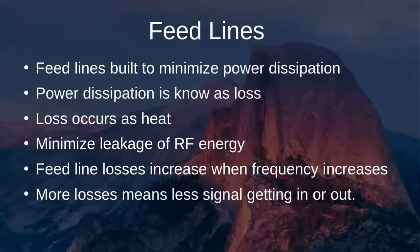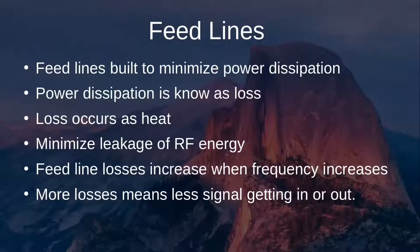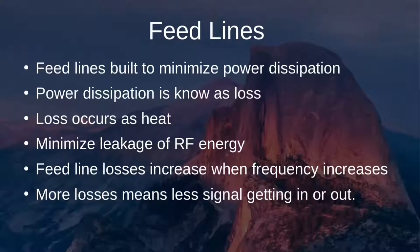Feed lines are built to minimize power dissipation, known as loss, which occurs as heat — energy dissipated if not transferred from the radio to the antenna. Feed lines also minimize leakage of RF energy through mechanisms such as shielding. Feed line losses increase with frequency, so operating at HF bands like 160 or 80 meters results in relatively small losses, while VHF and UHF frequencies such as 400 MHz or 2 meters have much more significant losses.